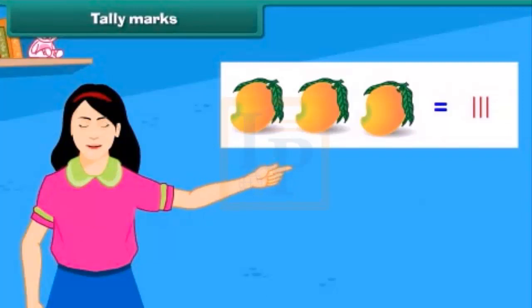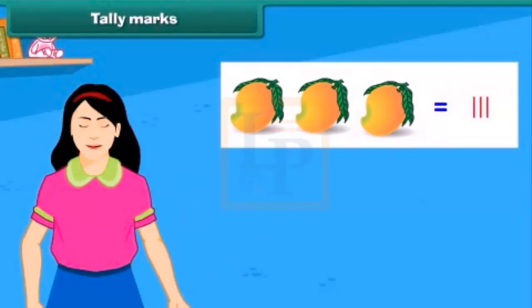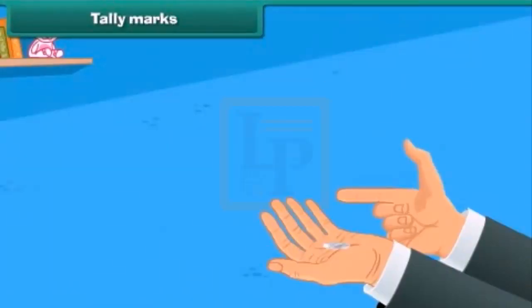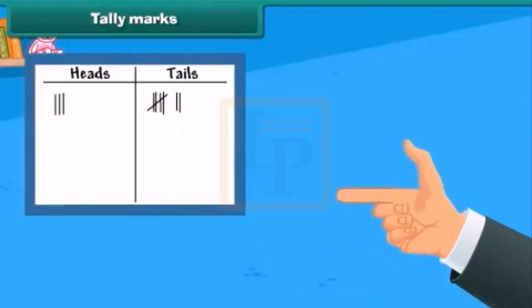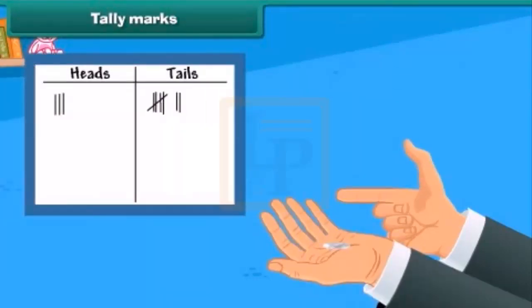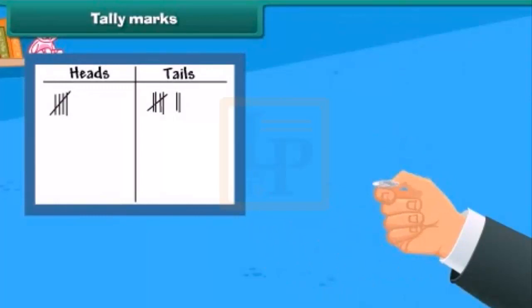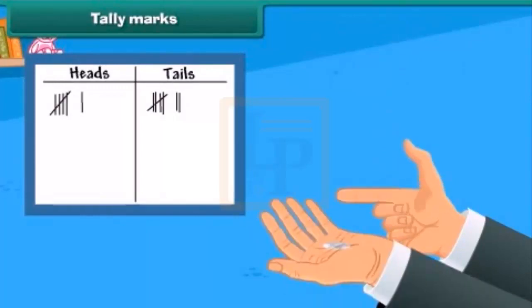Let's do an activity to prepare a tally chart. Flip the coin and see what side of the coin appears. Is it heads or tails? Mark it in the table as shown. Continue to flip the coin for 25 times and for each time, mark the reading in a table.